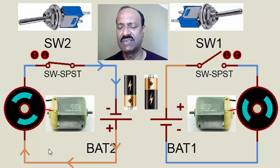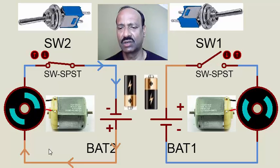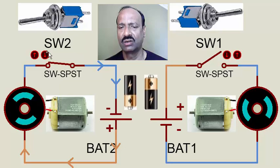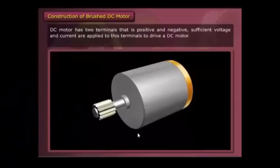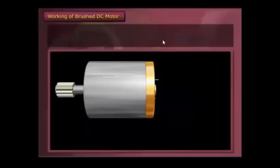This is the basic fundamental of robotics — for a motor to rotate in either clockwise direction or anticlockwise direction, or to switch it off. A DC motor has two terminals: a positive terminal and a negative terminal. Sufficient voltage and current are applied to those terminals of the DC motor.